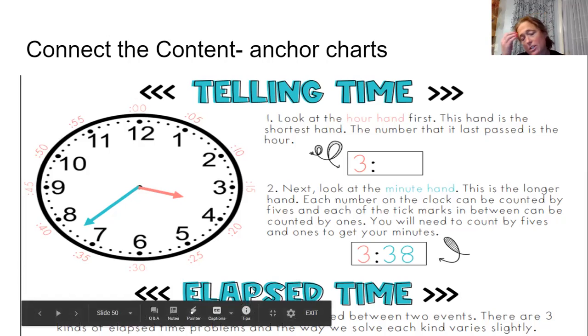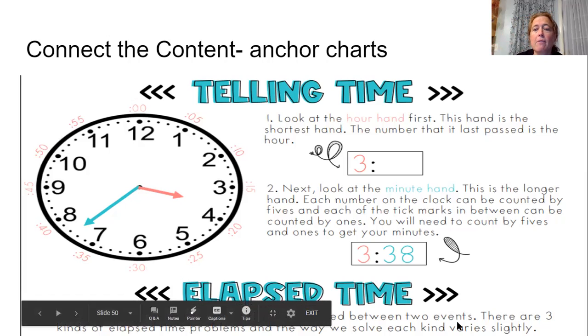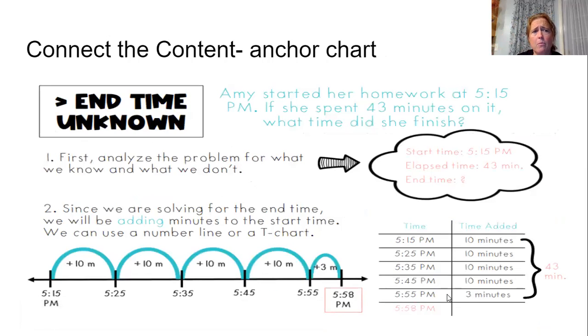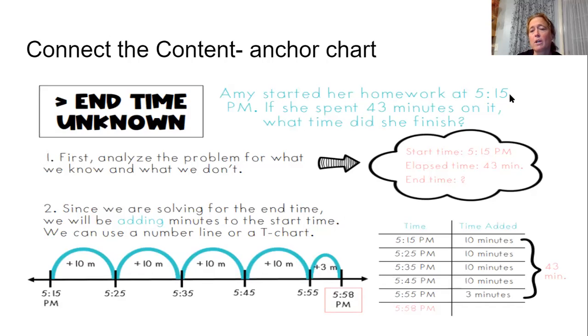Now we have moved on to elapsed time, which is the time it actually takes to complete a task or to travel somewhere. We have several types of elapsed time problems. We are going to be going over one of them today. Today's elapsed time problem will be end time unknown. That means that we are given the beginning time. Amy started her homework at 5:15. If she spent 43 minutes, so we're given the duration of time or how long it took her on it. What time did she finish?